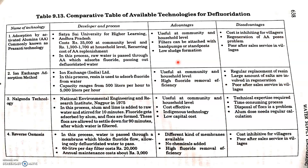These are some of the advantages and disadvantages of various techniques: absorption with activated alumina, ion exchange process, Nalgonda technique, and reverse osmosis.